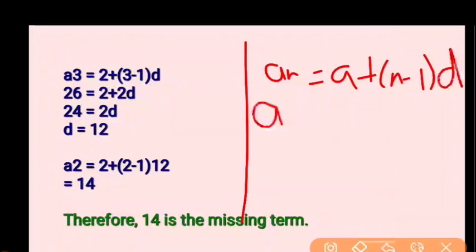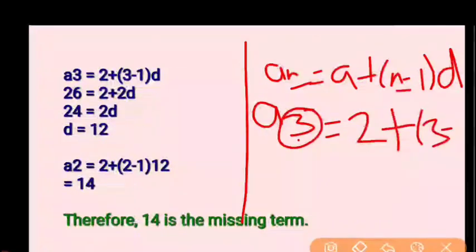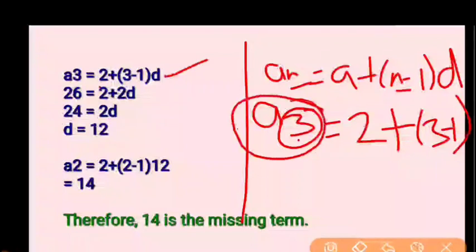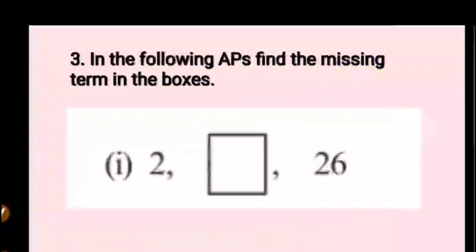We know A3. Using the formula An = A + (N−1)D, we can write A3 = A + (3−1)D = 2 + 2D. We know the value of A3 exactly — A3 = 26.